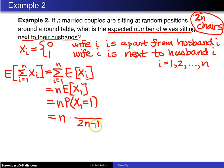And of those 2n minus 1 chairs, two of them, namely the chair to the left of the husband or the chair to the right of the husband, correspond to sitting next to the husband. That is the probability x1 equals 1. So what we get for this particular probability is 2n divided by 2n minus 1.